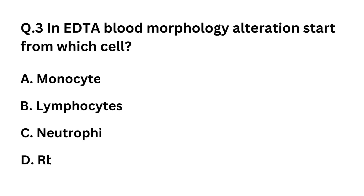Question 3: In EDTA blood, morphology alterations start from which cell? Option A: Monocyte. Option B: Lymphocytes. Option C: Neutrophils. Option D: RBCs.